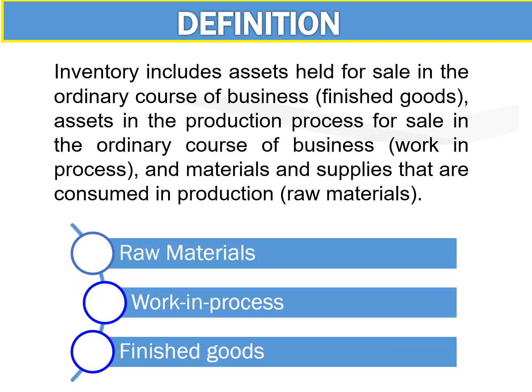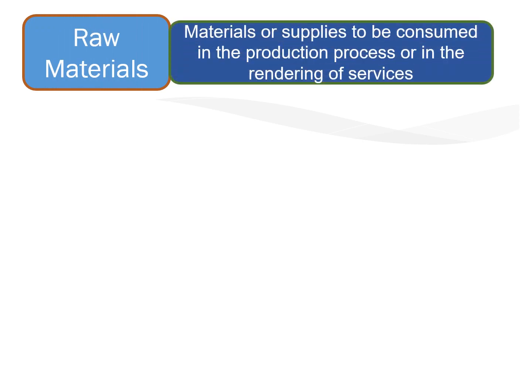Inventories are classified into three: raw materials, work-in-process, and finished goods. For example, if you are into selling clothes, the yarn and cloth and other things you need to produce the shirt are raw materials. If you are already working on the clothes but it's still in process — the sleeves, the color, not yet fully finished — that is work-in-process. When you already have the shirt, that's what we call finished goods.